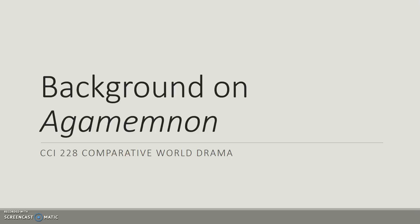Hello and welcome to our first background information video for CCI 228 Comparative World Drama. Today we're going to talk about the play Agamemnon, written by the playwright Aeschylus in 458 BCE and produced as a trilogy. The name of the trilogy is the Oresteia. It is in fact the only surviving trilogy that we have from the ancient world, so this is a very important play.